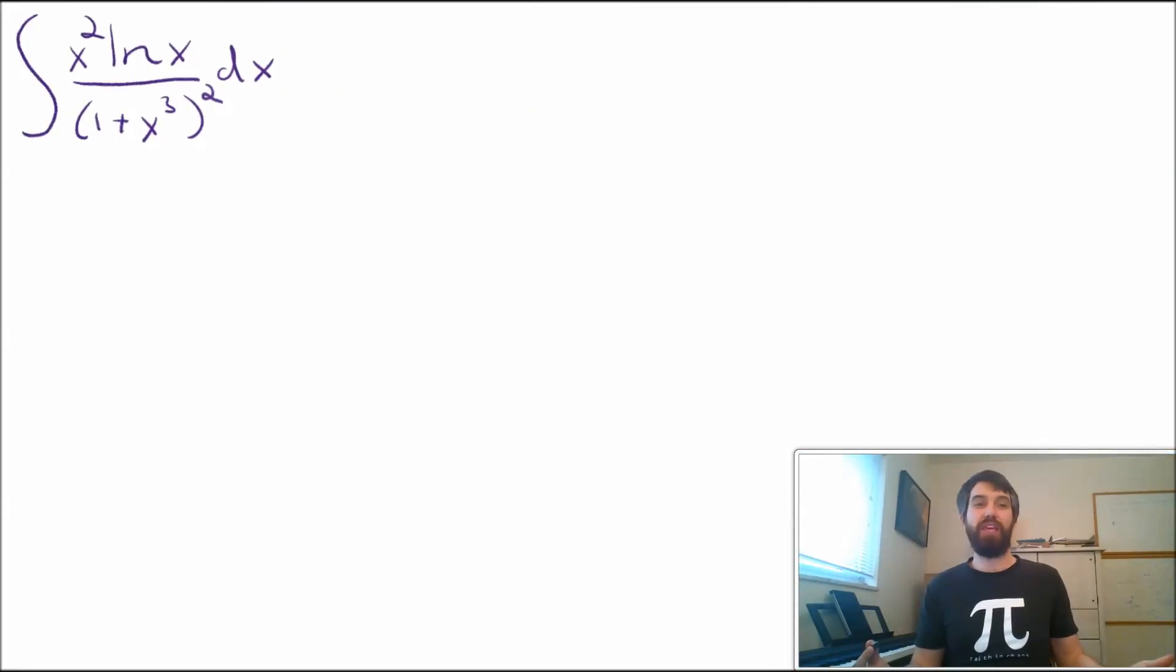First, I'm just going to note that the other major methods don't apply immediately. This is not a quotient of polynomials because of the ln of x, so it's not partial fractions. It's not going to be a trig sub because we have 1 plus x cubed, not 1 plus x squared. It doesn't have any trig terms, so it's not going to be some trig identities, at least not yet.